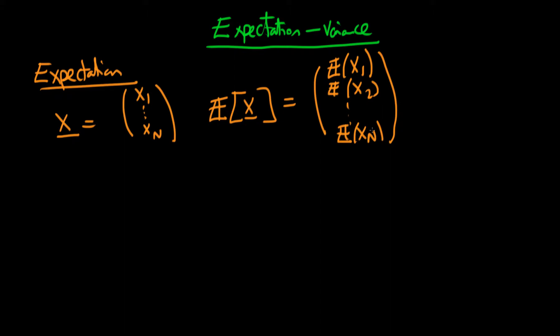So that's quite a simple generalization of the expectation from a scalar quantity to that of a vector quantity. Because of this simple generalization, we can talk about some of the properties of the expectations operator when we're talking about a random vector.